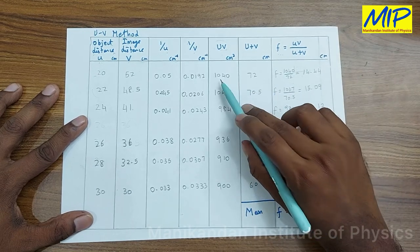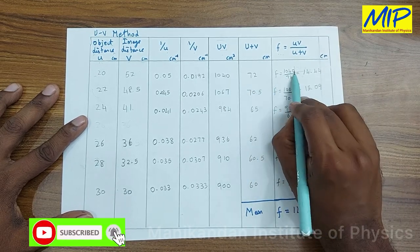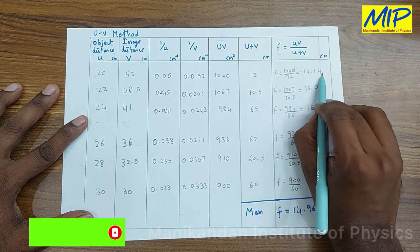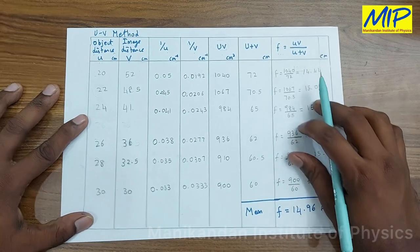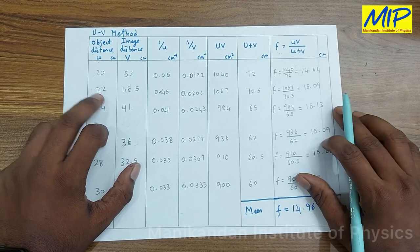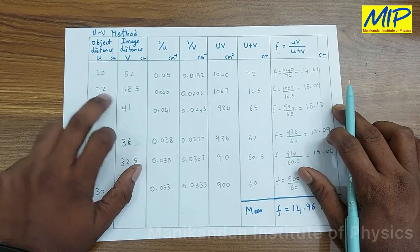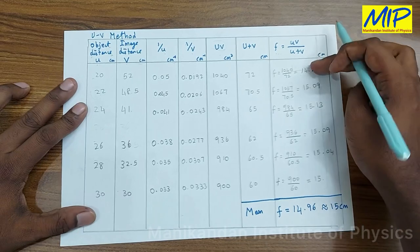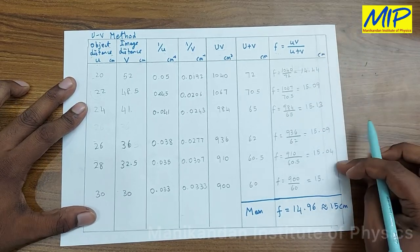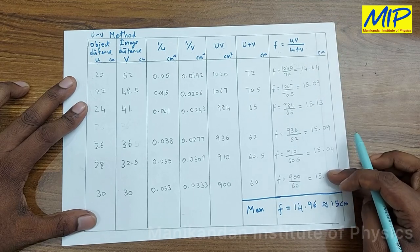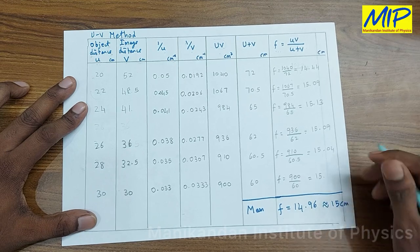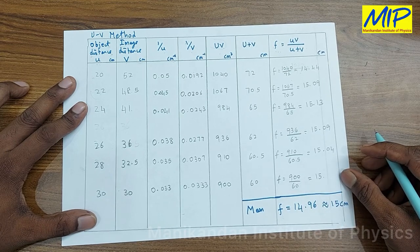Calculating f = uv / (u + v) for u = 20, v = 52 gives 14.44 centimeters. Similarly calculating for all other u and v values and taking the average, the mean focal length is approximately 14.96, or approximately 15 centimeters.